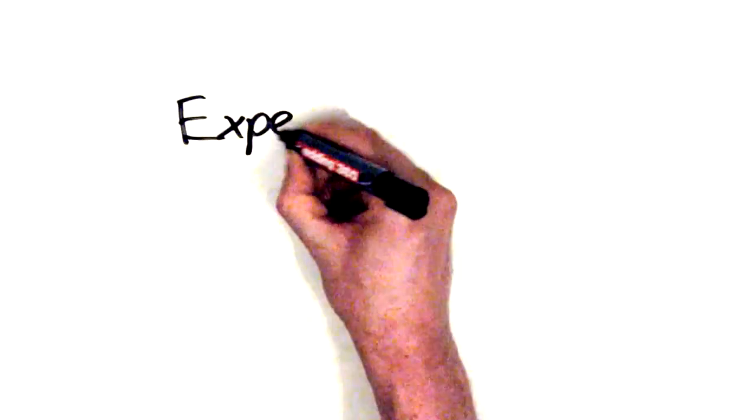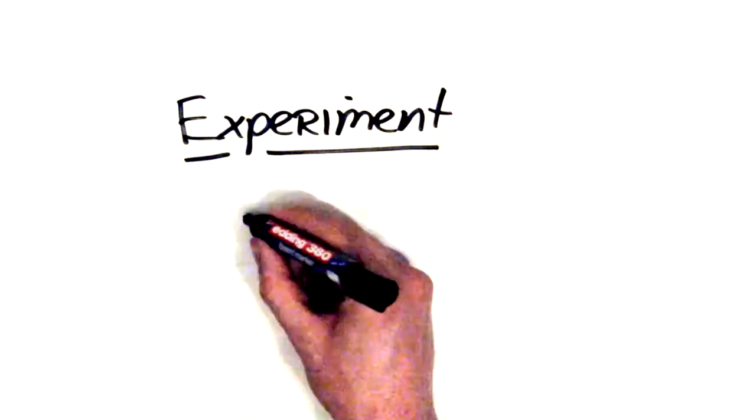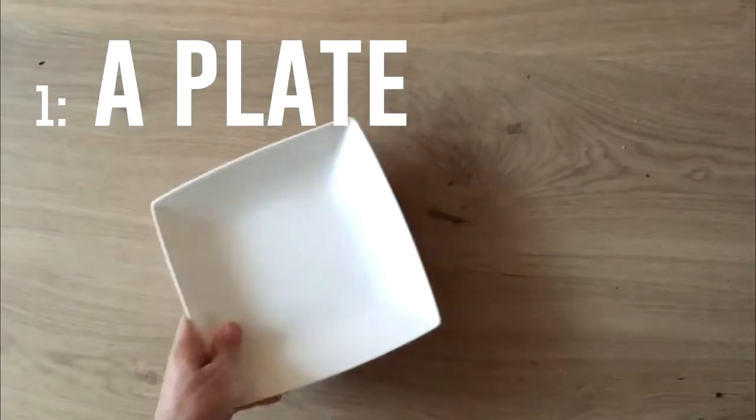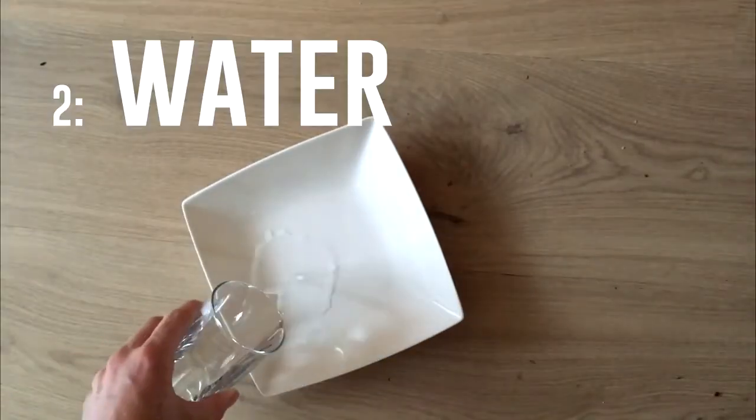So, what else can we do to water and the surface tension? The following experiment slash magic trick is one you can and should try at home. First we take a plate and we fill it with some ordinary water.